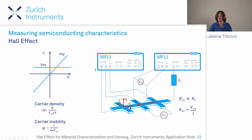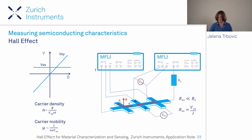To characterize semiconducting bulk and 2D materials, we perform Hall effect measurements using a Hall bar geometry—running current through and measuring longitudinal and Hall voltages. This gives the carrier density and mobility, which reflects material quality. Higher mobility indicates less carrier scattering. Quantum Hall effect measurements are also available, with further detail in an application note.